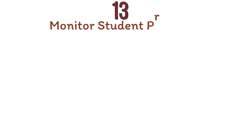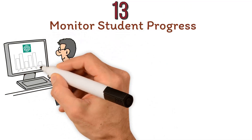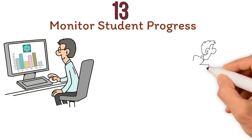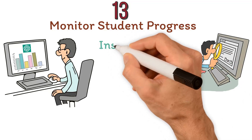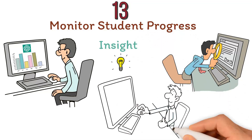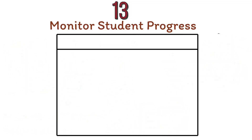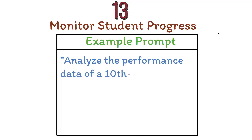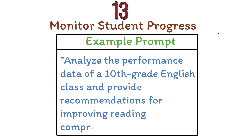Number thirteen: monitor student progress. Teachers can utilize ChatGPT to analyze and interpret student performance data, identifying patterns and areas for improvement. By providing insight into student progress, the AI model helps educators make informed decisions about instructional strategies and interventions. Example prompt: Analyze the performance data of a 10th grade English class and provide recommendations for improving reading comprehension skills.